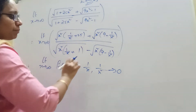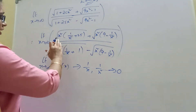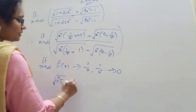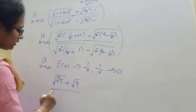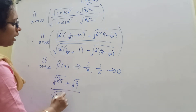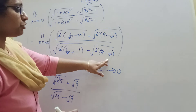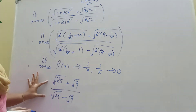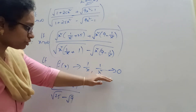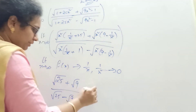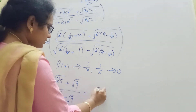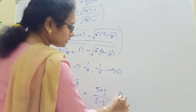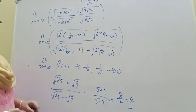Okay, 1 by x, 1 by x square and so on tends to 0. Therefore, 1 by x square and so on tends to 0. The most number value: root 25 plus root 9. So 0 is divided by root 25 minus root 9, which equals 0. Now 5 plus 3, right? 5 minus 3. So 5 plus 3 divided by 2 is 4. That answer will be 4.